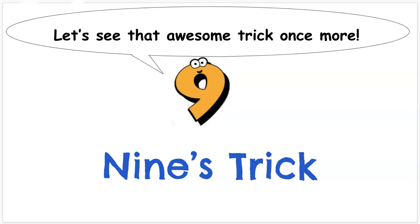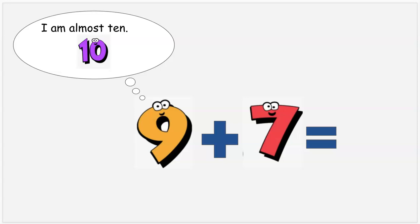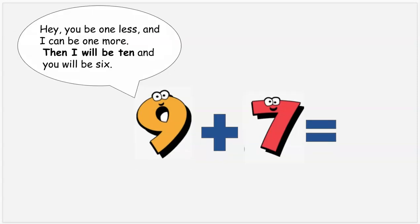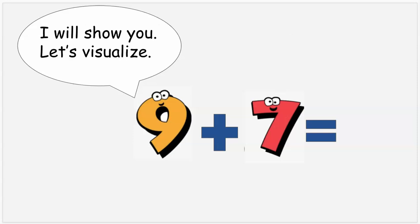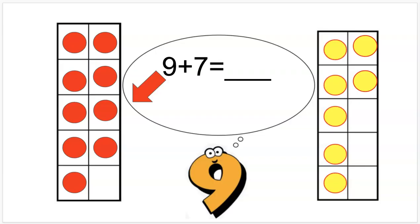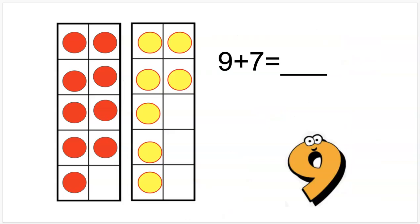Let's see that awesome trick once more. I am almost ten! Hey, hey Seven — you be one less and I can be one more. Then I will be ten and you will be six. I will show you. Let's visualize! There I am, nine, and there's seven. Let's scoot closer together — nine plus seven.